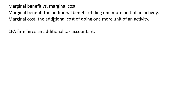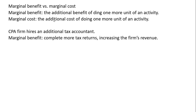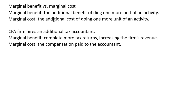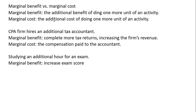If a CPA firm hires an additional tax accountant, the marginal benefit is that the firm will be able to complete more tax returns, increasing the firm's revenue. The marginal cost is the compensation paid to the accountant. If the benefits outweigh the cost, it makes sense to hire an additional tax accountant. Studying an additional hour for an exam: the marginal benefit is likely a higher exam score; the marginal cost is that you could have been doing something else with your time — there could also be a psychic cost if it's boring. If the benefits outweigh the cost, it makes sense to study for an additional hour.